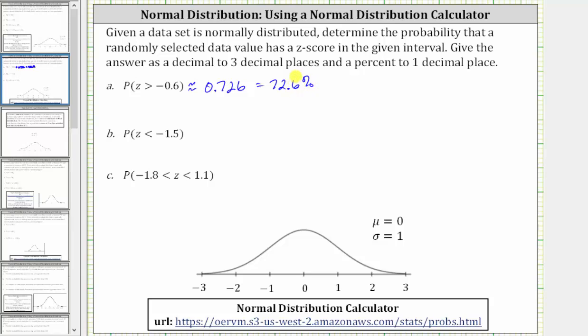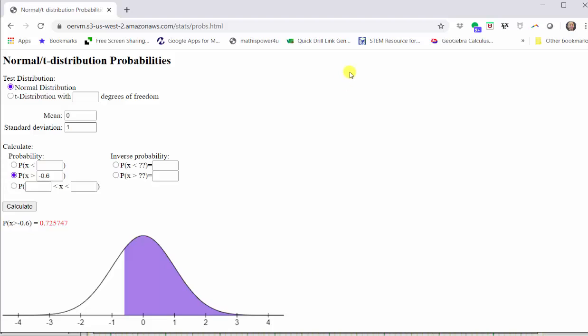Next, we're asked to find the probability of the z-score is less than negative 1.5. Going back to the calculator, we now select the first option where the inequality symbol is less than. And again, because we have a mean of zero and a standard deviation of one, we know this is the standard normal distribution. And therefore, the x-value is the same as the z-score. And therefore, we enter negative 1.5. Click Calculate.